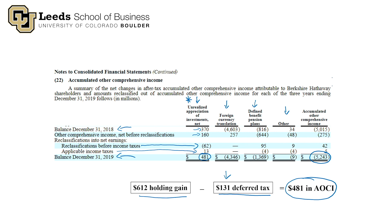Here's a thought exercise: if right before year end on December 31st, 2019, Warren Buffett called and said to sell all fixed maturity investments, all these gains and losses would have been realized, and this $481 million would have flowed directly into the income statement, increasing net income. In fact, if Berkshire Hathaway had a bad quarter and needed to boost net income, they could sell some of these available for sale debt securities that have unrealized holding gains to juice their net income.